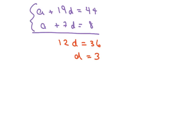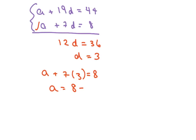Now to solve for a, because I have to find my a and my d, I'm going to write a plus — I'll use this equation, it looks better. 7 times 3 equals 8, so a equals 8 minus 21, so a is negative 13. So I found my a and my d — that was the first part.